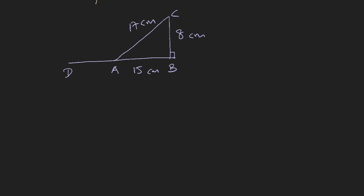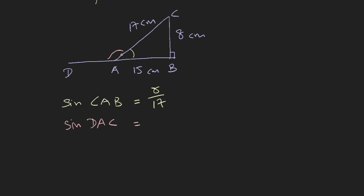Let's look at an example. Say you want to find sine of angle CAB. Sine is the ratio of the opposite side over the hypotenuse, so it's 8 over 17. Since this is an acute angle, your answer is just 8 over 17. Now what happens when you want to find the sine of the obtuse angle CAD? This angle is greater than 90 degrees and it's not itself a triangle, so by definition you look at the corresponding acute angle, and sine of that acute angle is also 8 over 17.